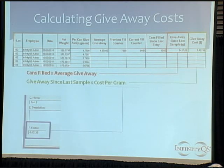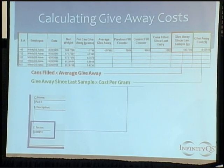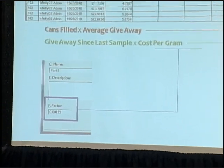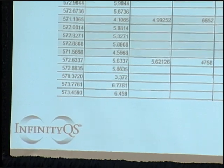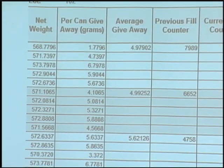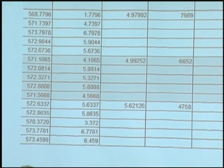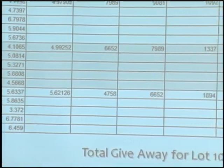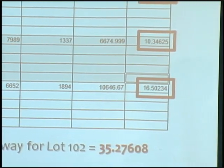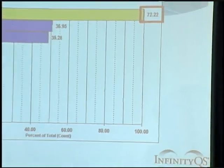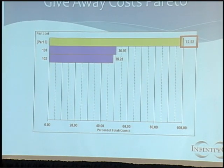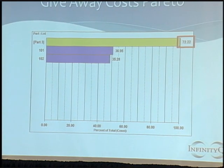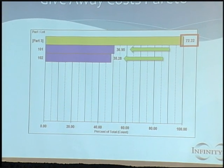Multiplying by the per-gram cost — about a hundredth of a penny — I gave away $8.42 between my last sample. As I continue sampling throughout the lot run, my total giveaway for that run was $35.28. For part three of my mixed vegetable can, when I ran that job I gave away $72 worth of product — lot 102 was $35 and lot 101 was $37.